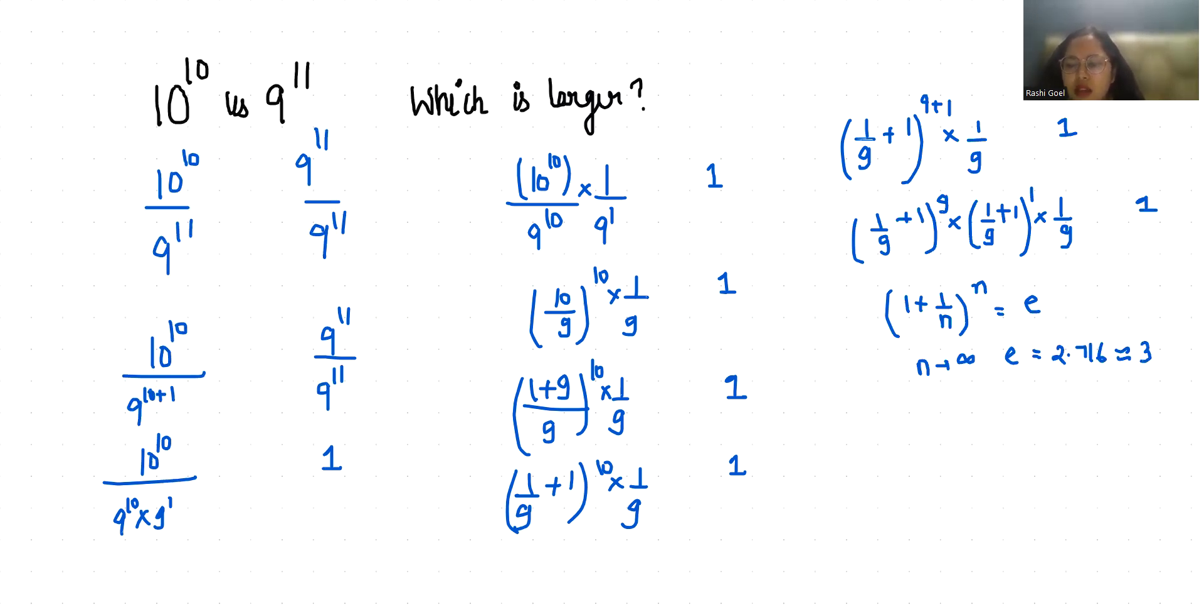We can replace this by 3 times 1 by 9. Plus 1 is 10 by 9 whole power 1 times 1 by 9, here 1. So it becomes 30 by 81, or we can write it as 10 by 27.